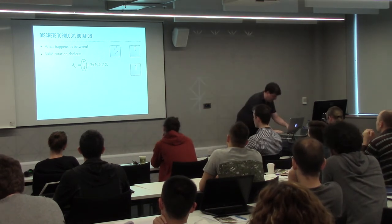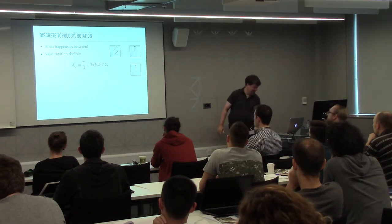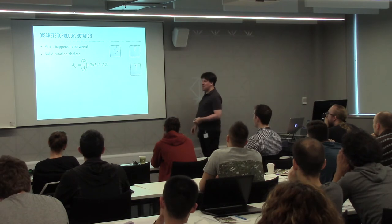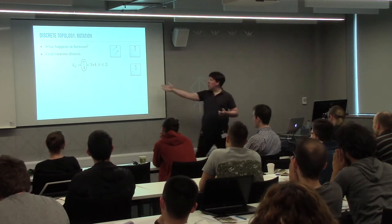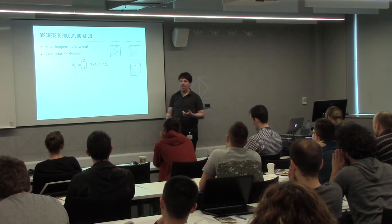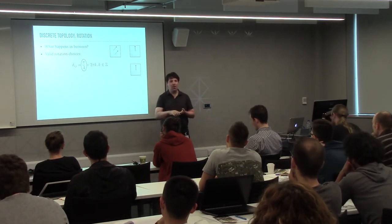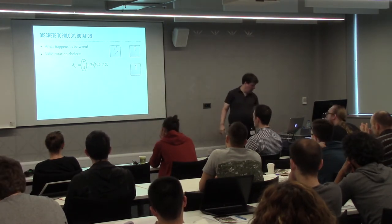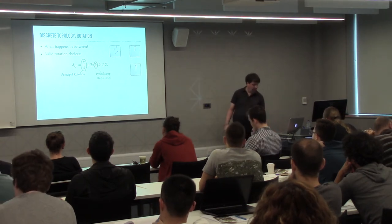The other choice is also valid — I can do this kind of thing instead. My constraint is that I still have to go from this vector to this vector no matter what. All the other choices differ by a rotation of 2π around itself — I can enumerate them by some integer k. So if this is my principal rotation, then the others — all possibilities for k — are called period jumps.